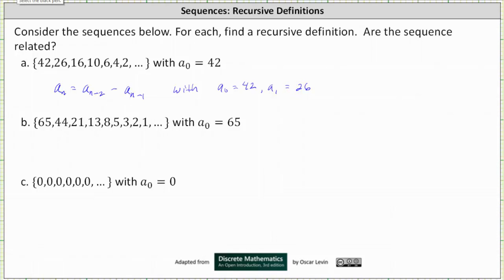Before we go to part B, let's check to make sure this works. Let's say we're looking for a sub 3. A sub 3 is equal to a sub 1 minus a sub 2. Well, remember the first term is a sub 0, so a sub 1 is 26. A sub 2 is 16. 26 minus 16 is 10. And notice a sub 3 is 10.